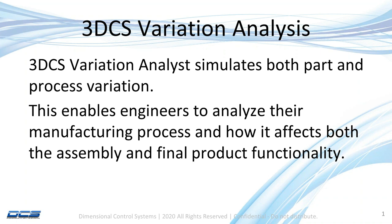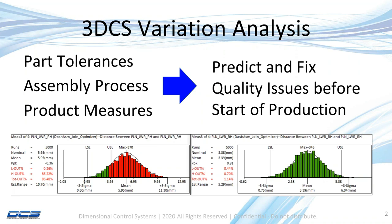3DCS variation analysis is a key foundation — it simulates both product and process variation and allows engineers to analyze manufacturing processes and product design to determine the dimensional quality characteristics of the final assembly. In our variation analysis programs, you write a model where you put in the part tolerances and the assembly processes, which we call moves, and product measures.